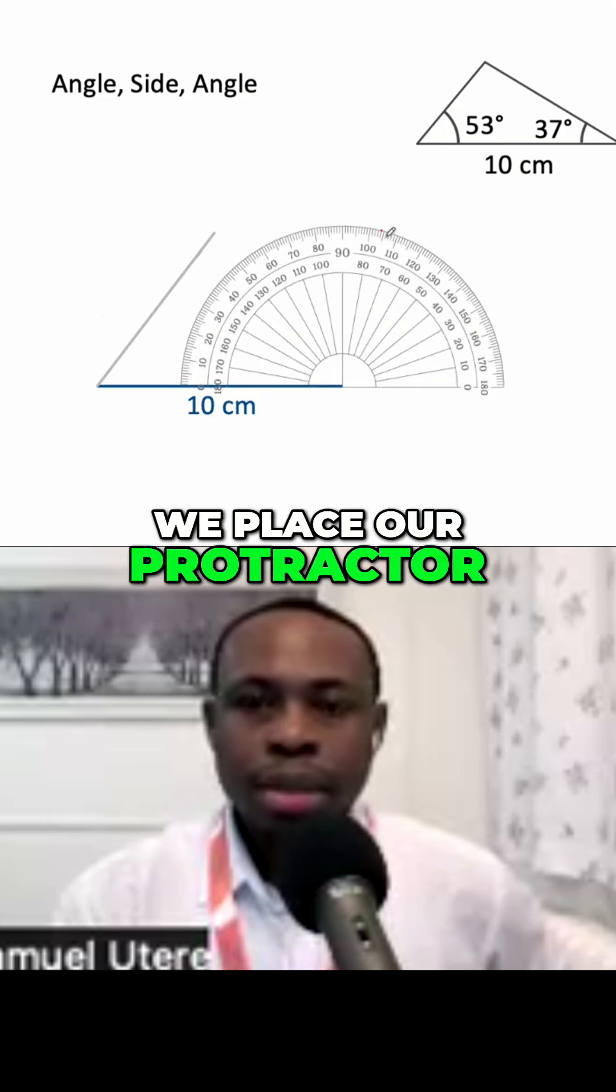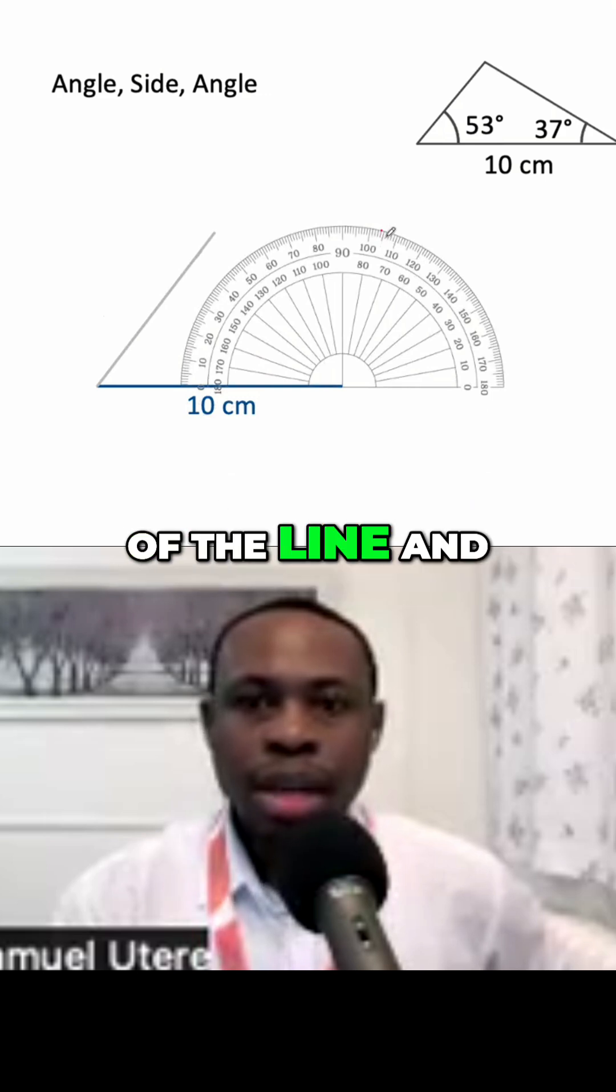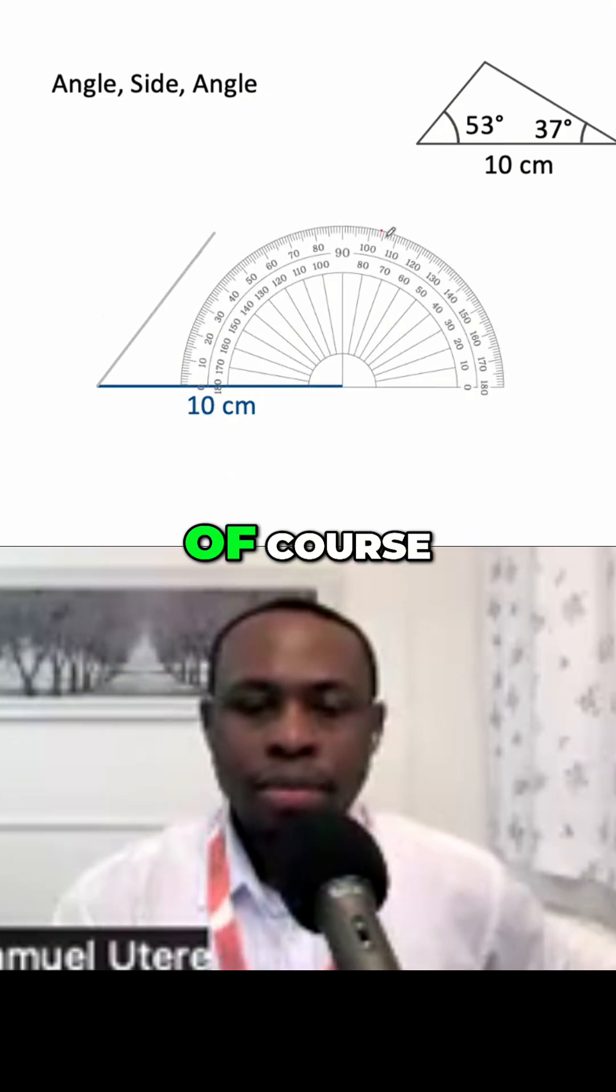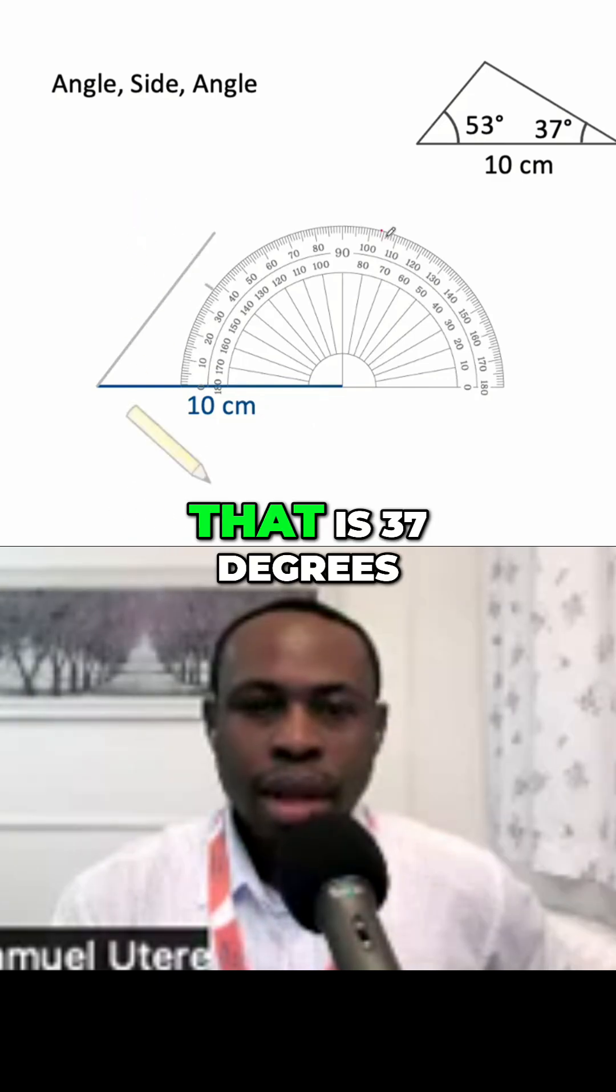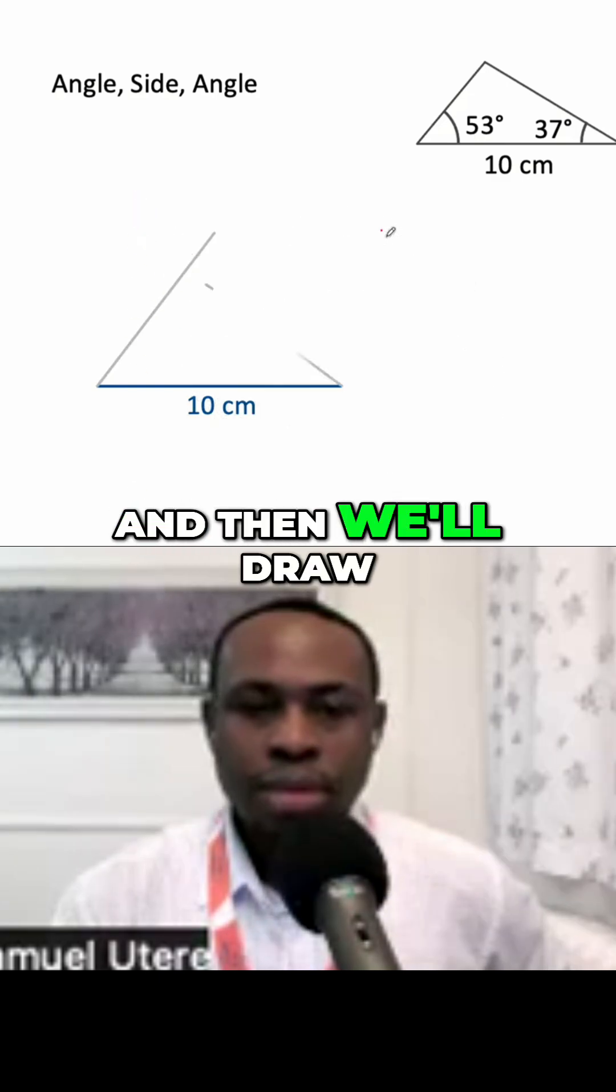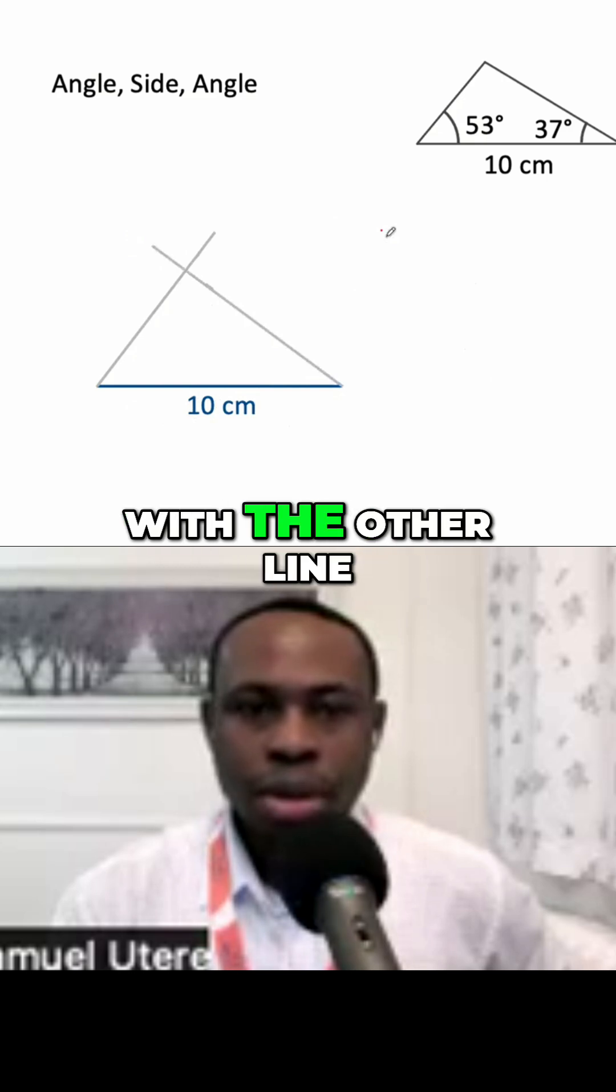we place our protractor on the right hand side of the line and measure 37 degrees. Of course, you would see that that is 37 degrees and then we'll draw the line to meet with the other line.